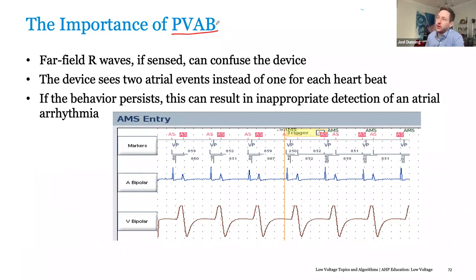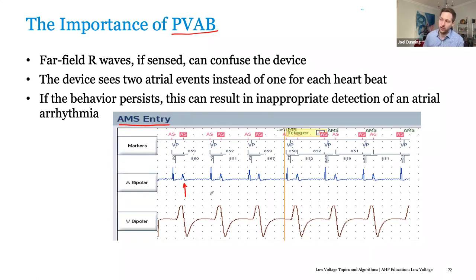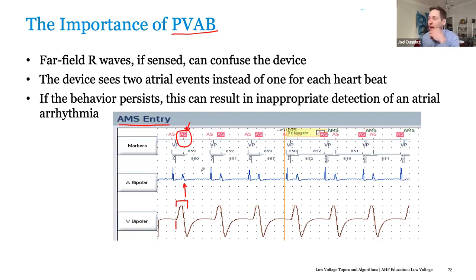Next is PVAB — post-ventricular atrial blanking. This is actually when the device is completely blind after a ventricular event. If you've inappropriately programmed your PVAB, what you may see is double counting because you'll be counting the ventricular signal on the atrial channel. This can lead the device to trigger AMS — it senses this as an atrial arrhythmia when it isn't. Had the device had a proper PVAB, when this ventricular event occurred it would blank for a period of time and miss those atrial events being over-sensed, and no longer count them. Basically, with PVAB we're trying to obscure what's happening in the ventricle on the atrial channel to avoid inappropriate mode switching.